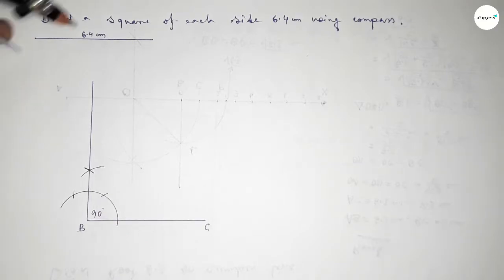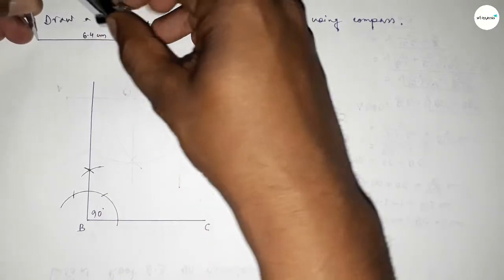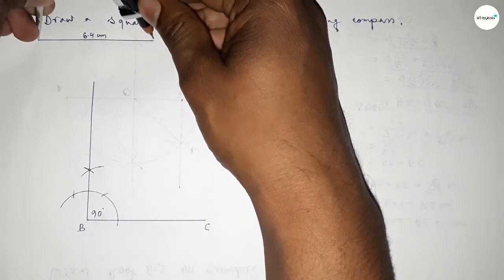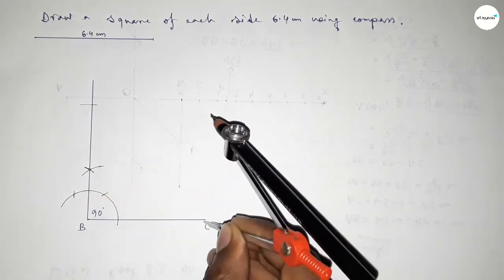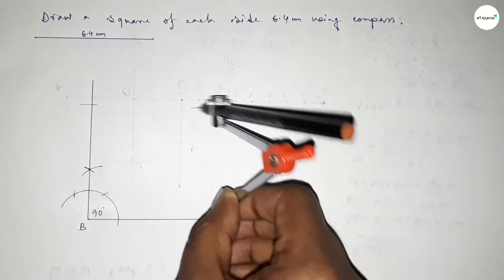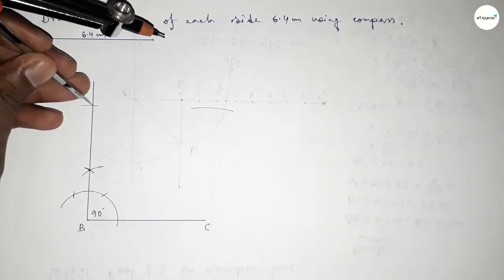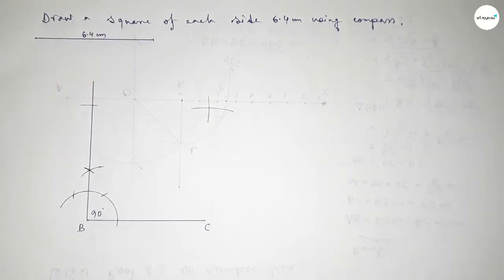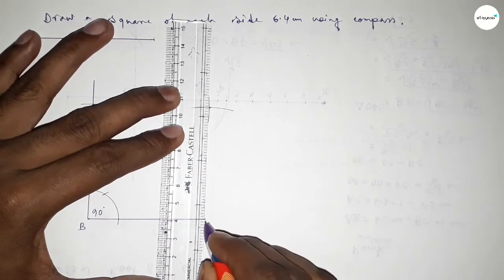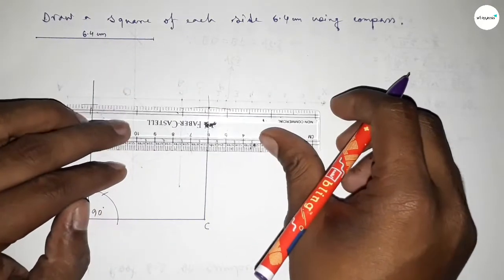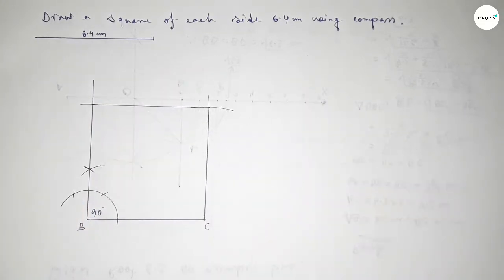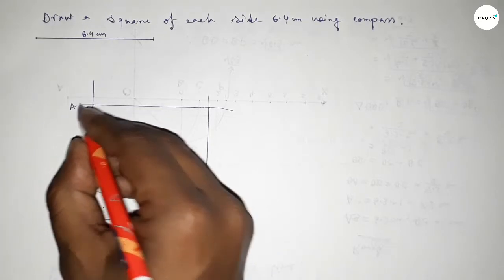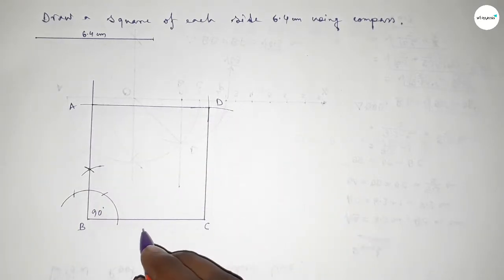Now taking the length 6.4 centimeters by using the compass and putting the compass on point B, cutting here. Again with the same length, putting the compass and cutting here so both curves intersect at a point. Joining this line, then joining this line to get the square.